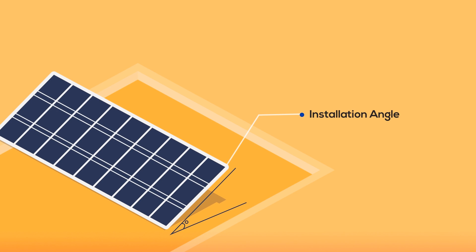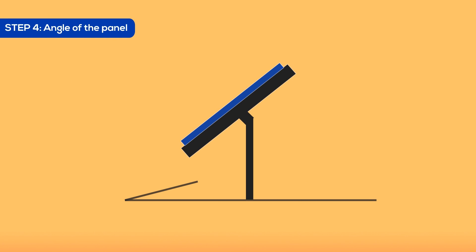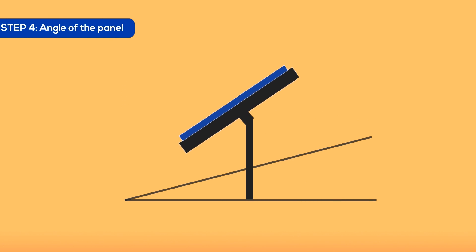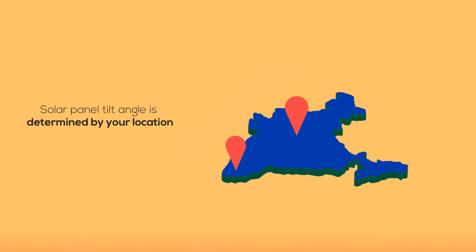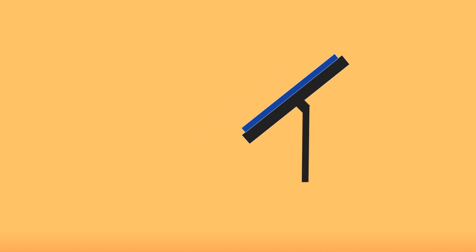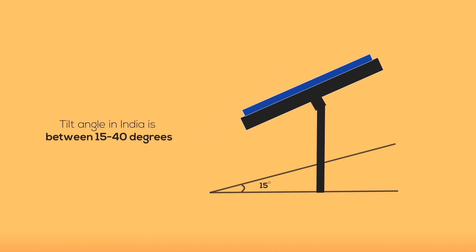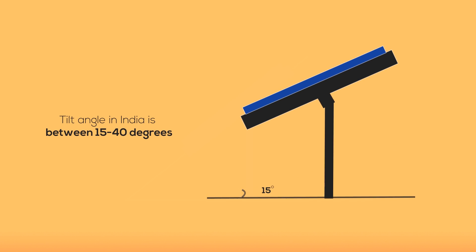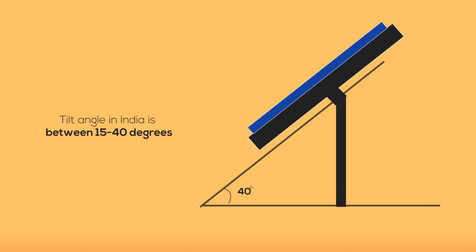Installation angle. Another key factor to look out for is the tilt angle. The angle between the horizontal ground and your solar module should be decided according to your location. You can mount the solar panels on the structure and adjust the tilt angle between 15 to 40 degrees depending upon your location.